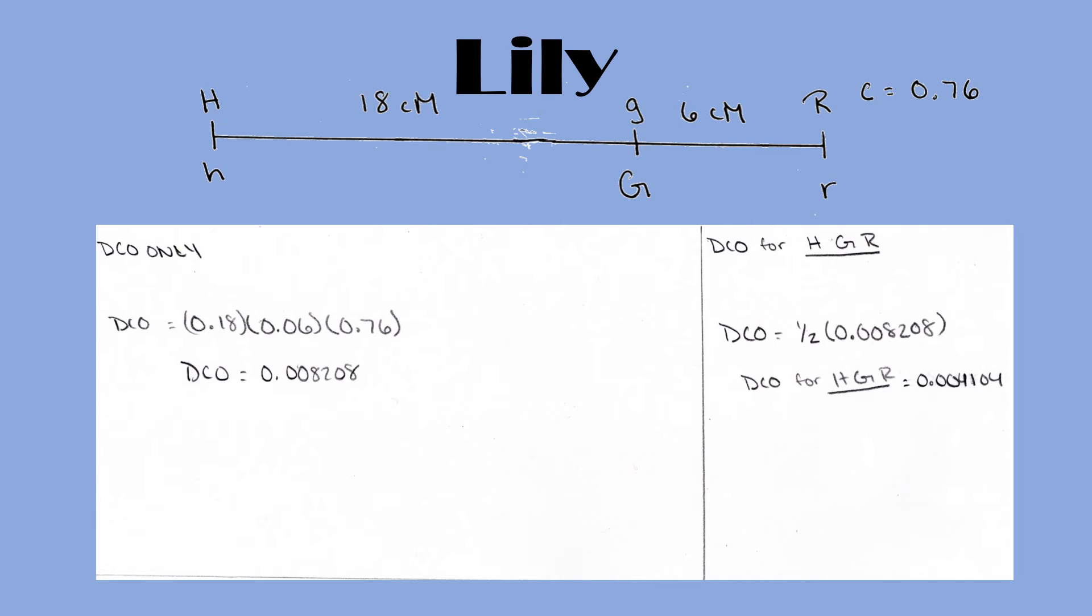But that is for a double crossover only. So in order to get this specific gamete, we have to multiply it by one half.